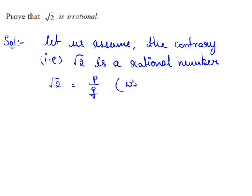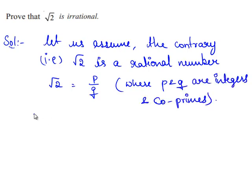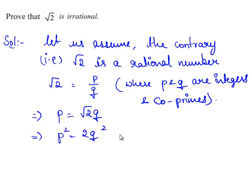Where p and q are integers and also co-primes. This implies p is equal to root 2 times q. Squaring both sides, we have p squared is equal to 2q squared. Let this be equation 1. This can be written as p squared by 2 is equal to q squared.